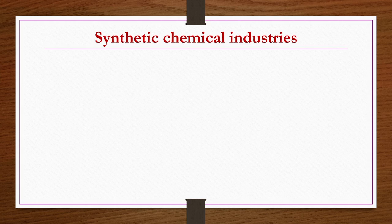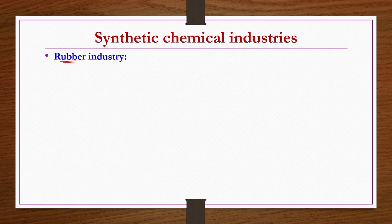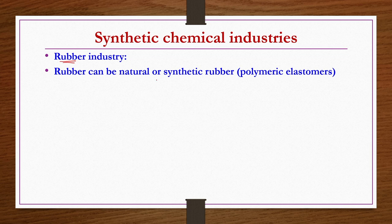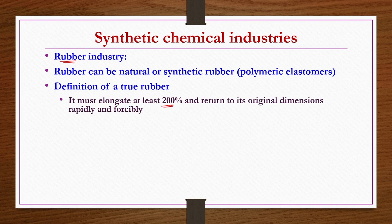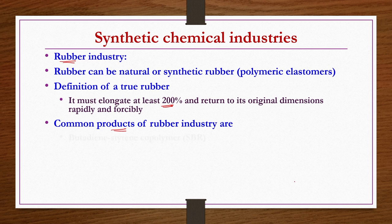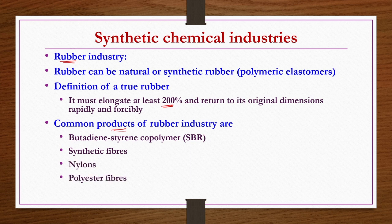Now, synthetic chemical industries — starting with rubber industry. Rubber is both a synthetic and natural product, but synthetic rubber has so many different varieties that the synthetic rubber industry dominates over natural rubber. Rubber can be natural or synthetic; by definition, a true rubber must elongate at least 200% and return to its original dimensions rapidly and forcibly. Common products include styrene butadiene copolymer (SBR), synthetic fibers, nylons, polyester fibers, and viscose rayon fibers.